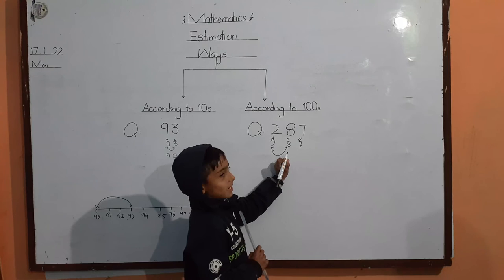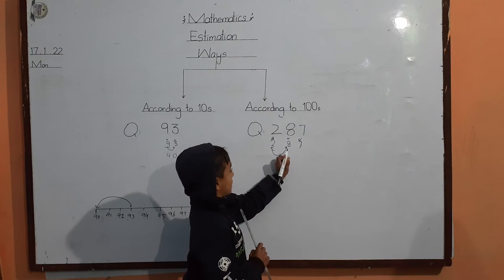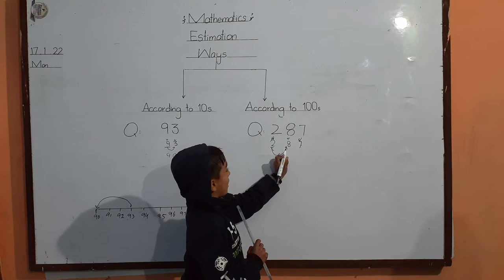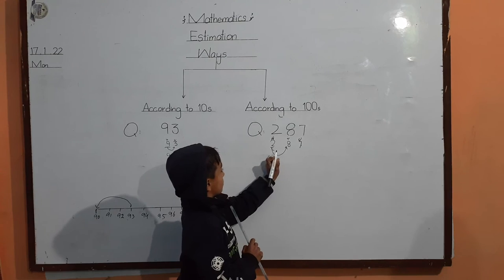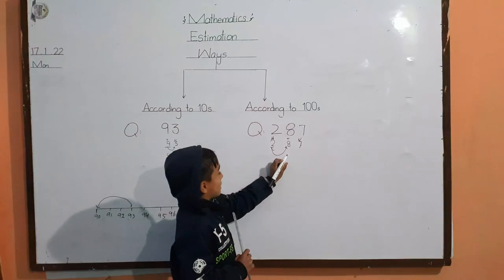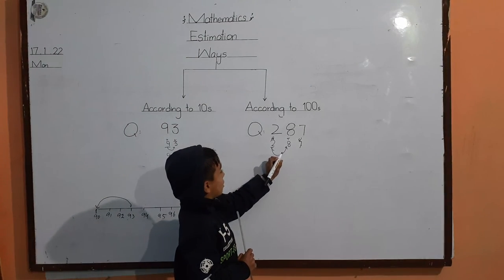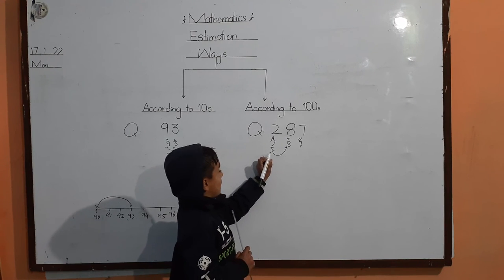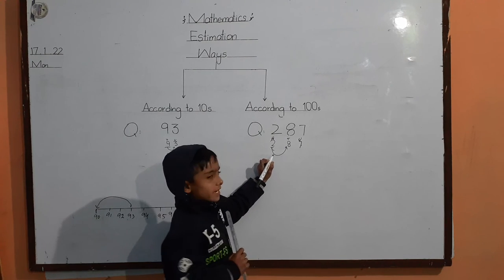Arrow keompa wala digit dekhna. Agar greater than eight to five. Agar greater than ho, to one add karayenge. Agar less than ho, to one add nahi karayenge.